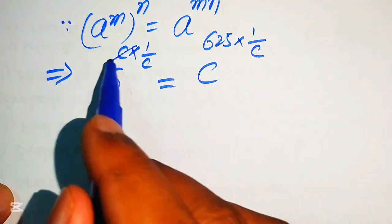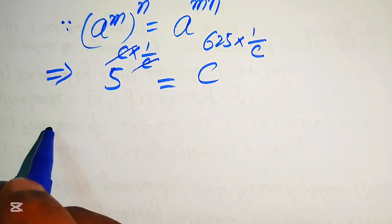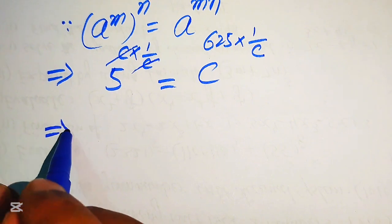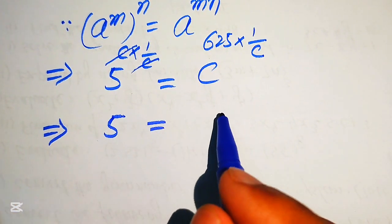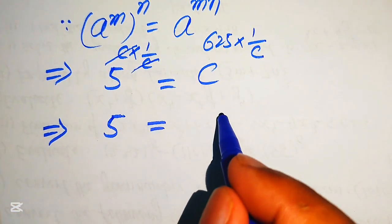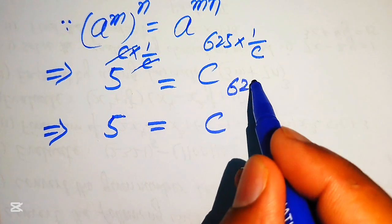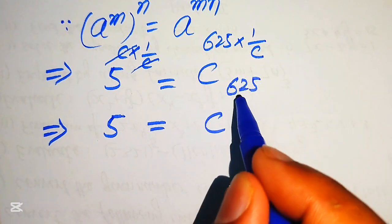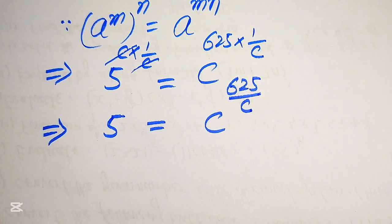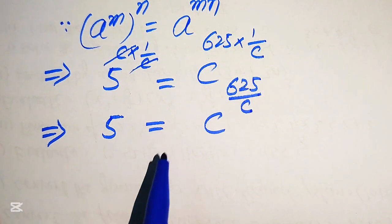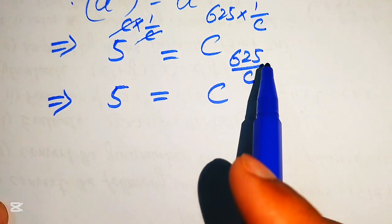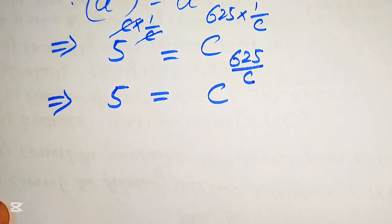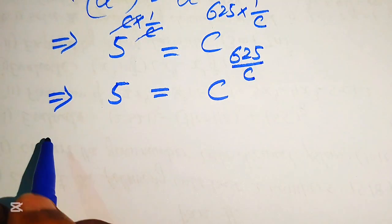Here the c in the exponent on the left cancels out, and we obtain 5 equals c to the power of 625 divided by c. So c has moved to the right hand side, and now we need to move 625 to the left hand side.